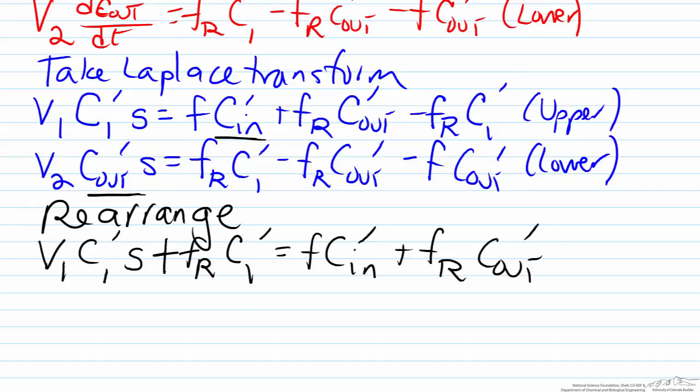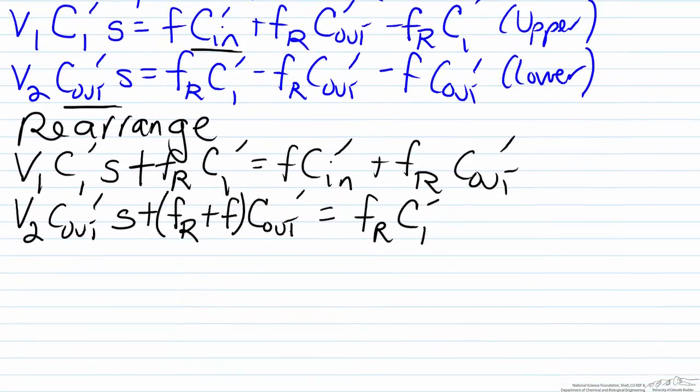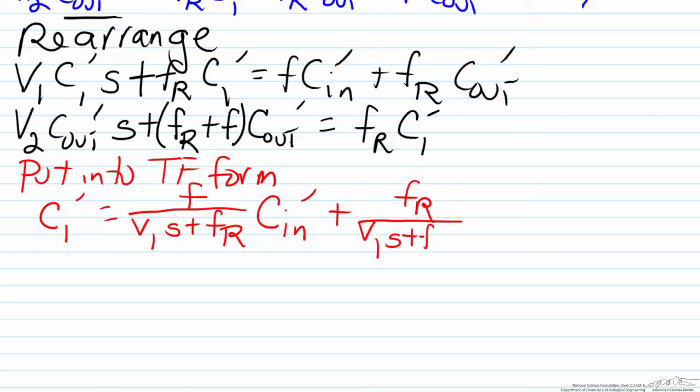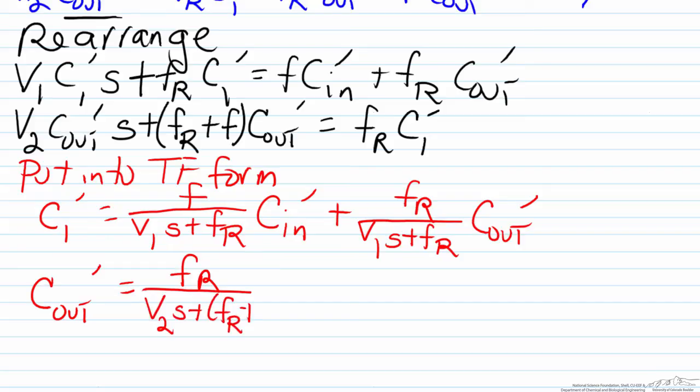When we rearrange and put these into transfer function form, we have C_1' equals F over (V_1 s + F_R) multiplied by C_in' plus F_R divided by that same denominator multiplied by C_out'. Similarly, C_out' equals F_R divided by (V_2 s + F_R + F) multiplied by C_1'.